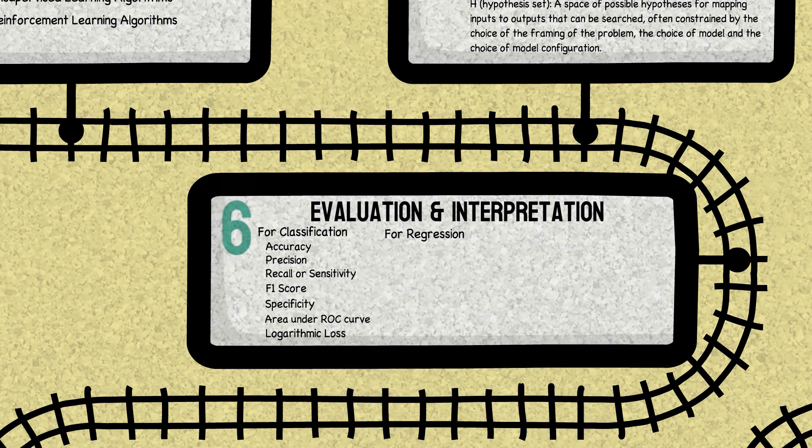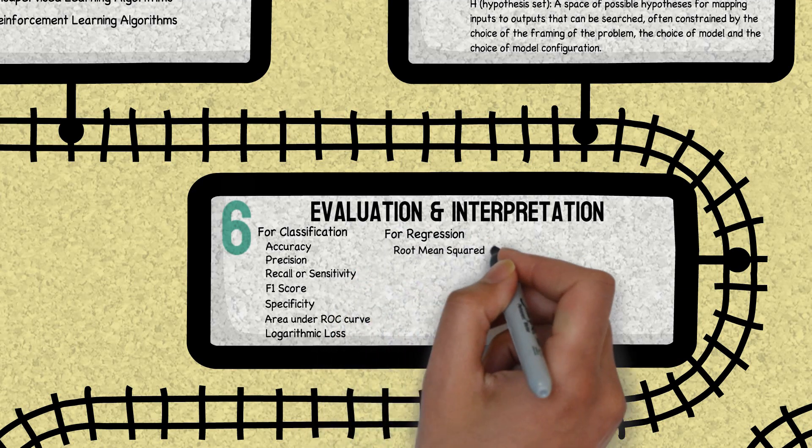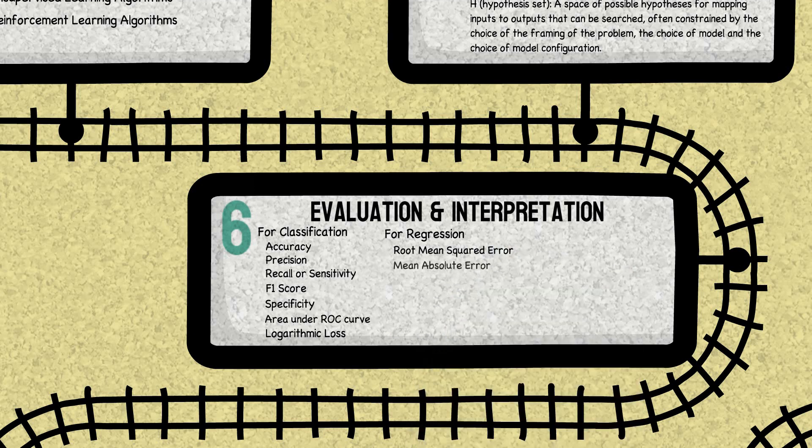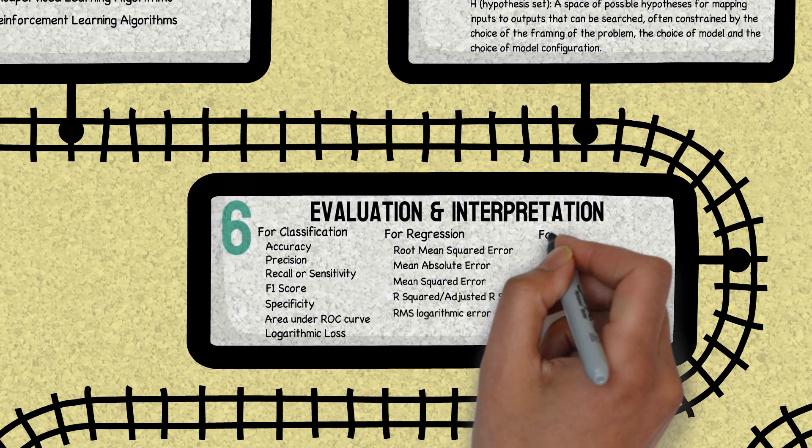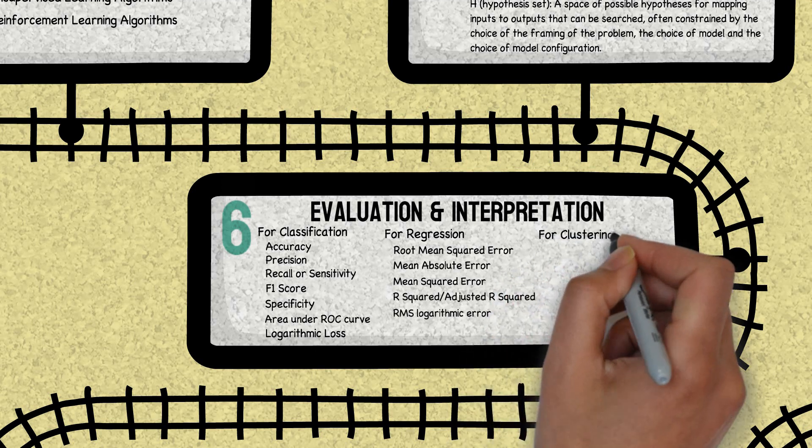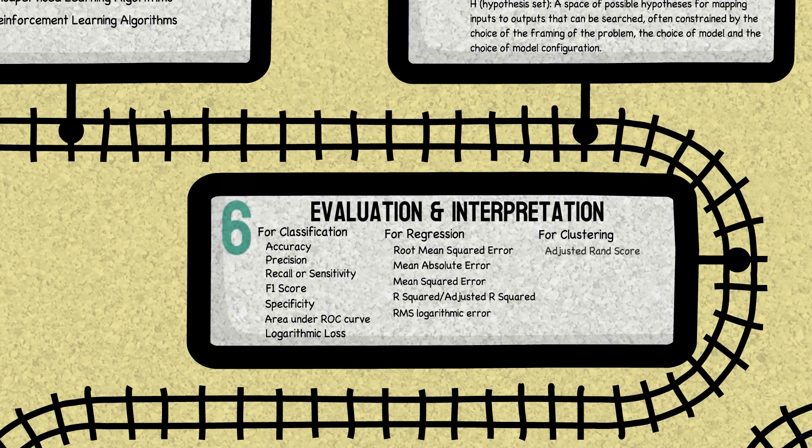Similarly for regression model we have got performance metrics like root mean square error, mean absolute error, mean square error, R squared error, and so on. Similarly for clustering we have got adjusted R index, adjusted mutual information, and so on.